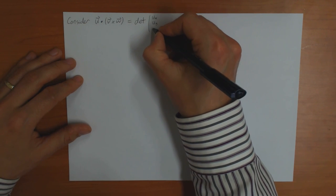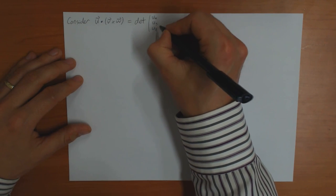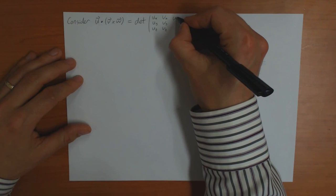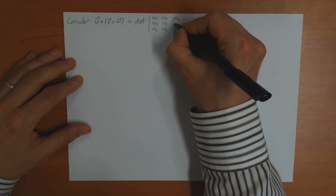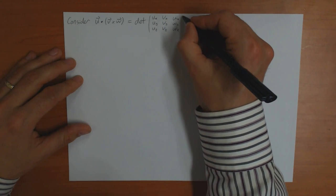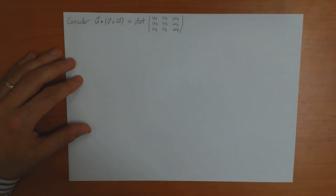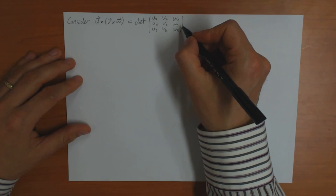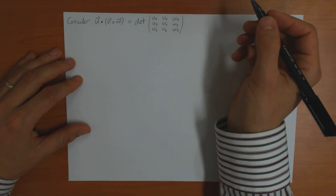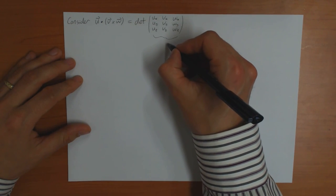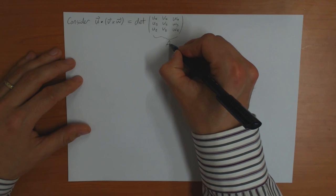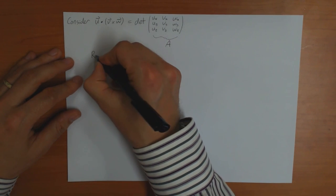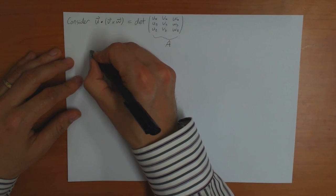Specifically, U · (V cross W) equals the determinant of the matrix with entries Ux, Uy, Uz in the first row; Vx, Vy, Vz in the second row; and Wx, Wy, Wz in the third row. I'll call this matrix A.